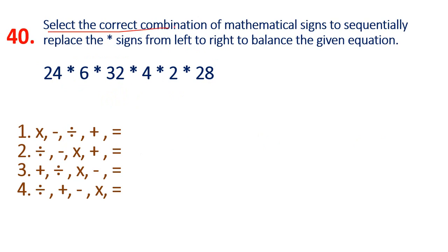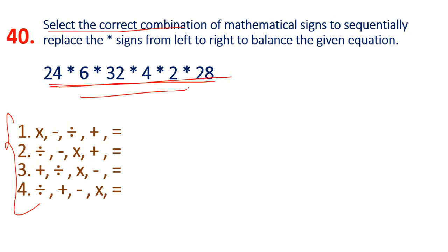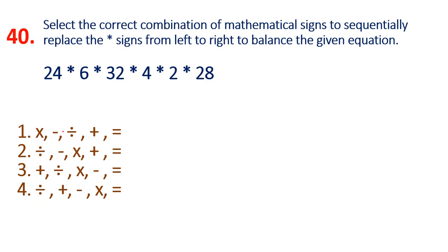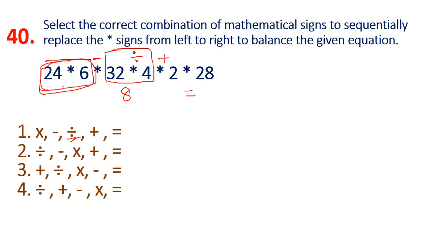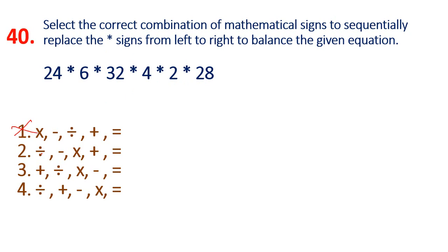Question 40: Find which symbol makes the equation correct. Division symbol: 32 divided by 4 equals 8. Now trying 24 into 6: with minus and plus, 24 times 6 is 144, equals 8, making 28. Division is 4. Trying 32 into 4: checking combinations - division, addition, minus, multiplication options.